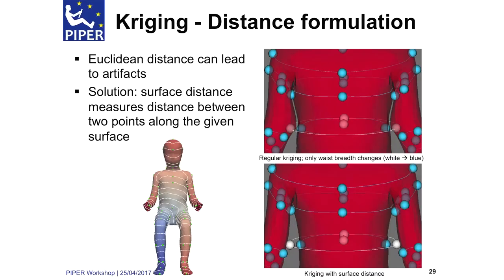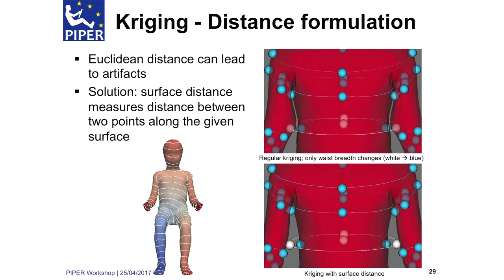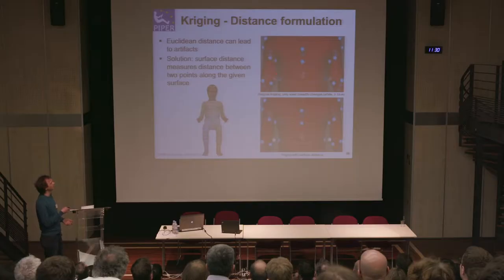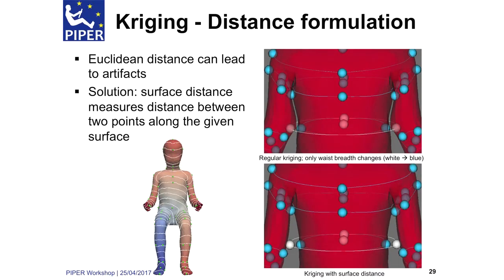Another problem is that the basic formulation of kriging uses Euclidean distance to describe the covariances of the displacements, which can lead to ugly artifacts. For example, I shrunk the waist of the model, and since there are no control points on the arm, a control point that was very close to the arm attracted all the arm points as it shrunk — because the Euclidean distance is very short there. However, the topological distance is actually quite large, so you don't want this to happen — you only want it to shrink the waist.